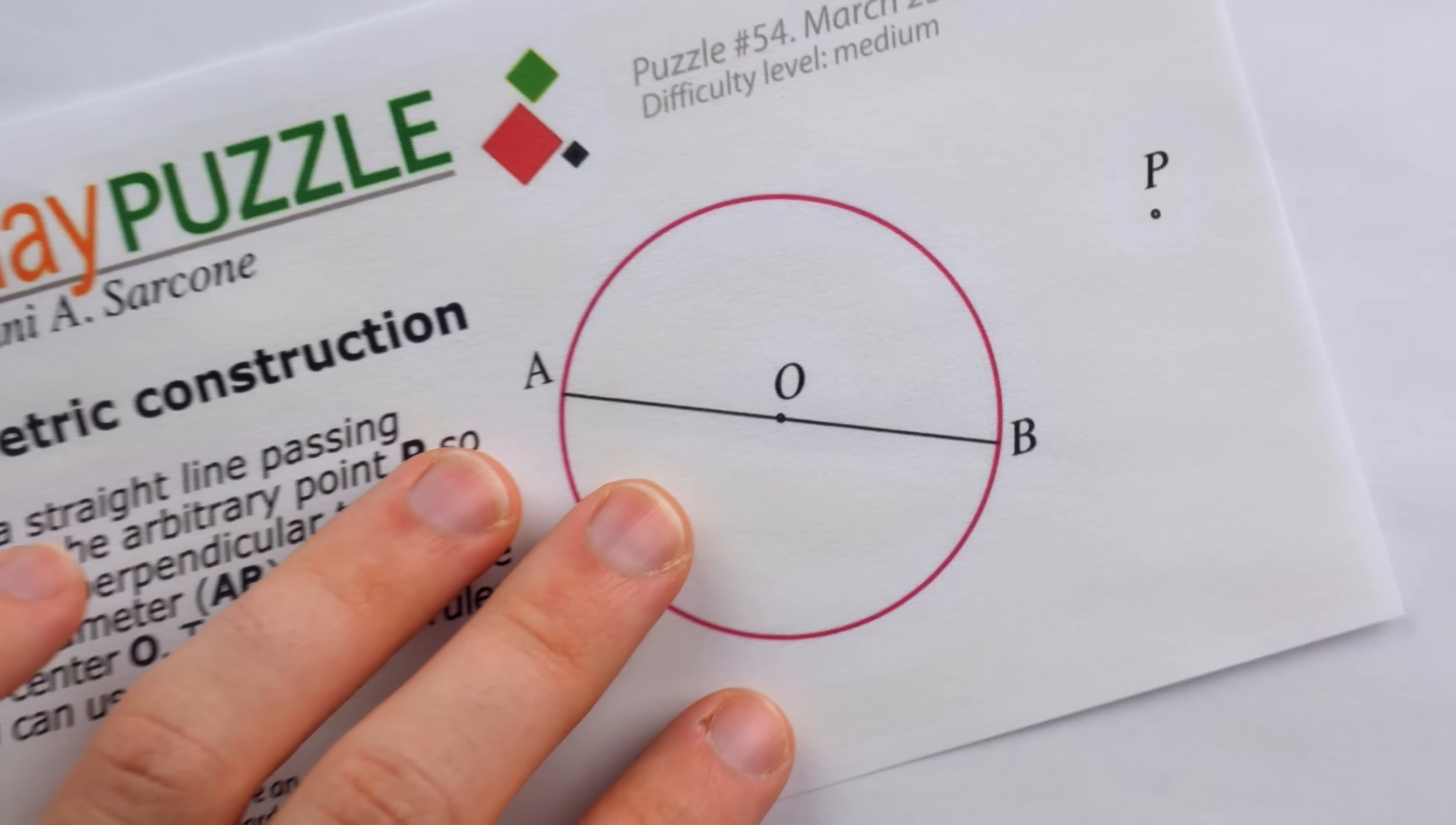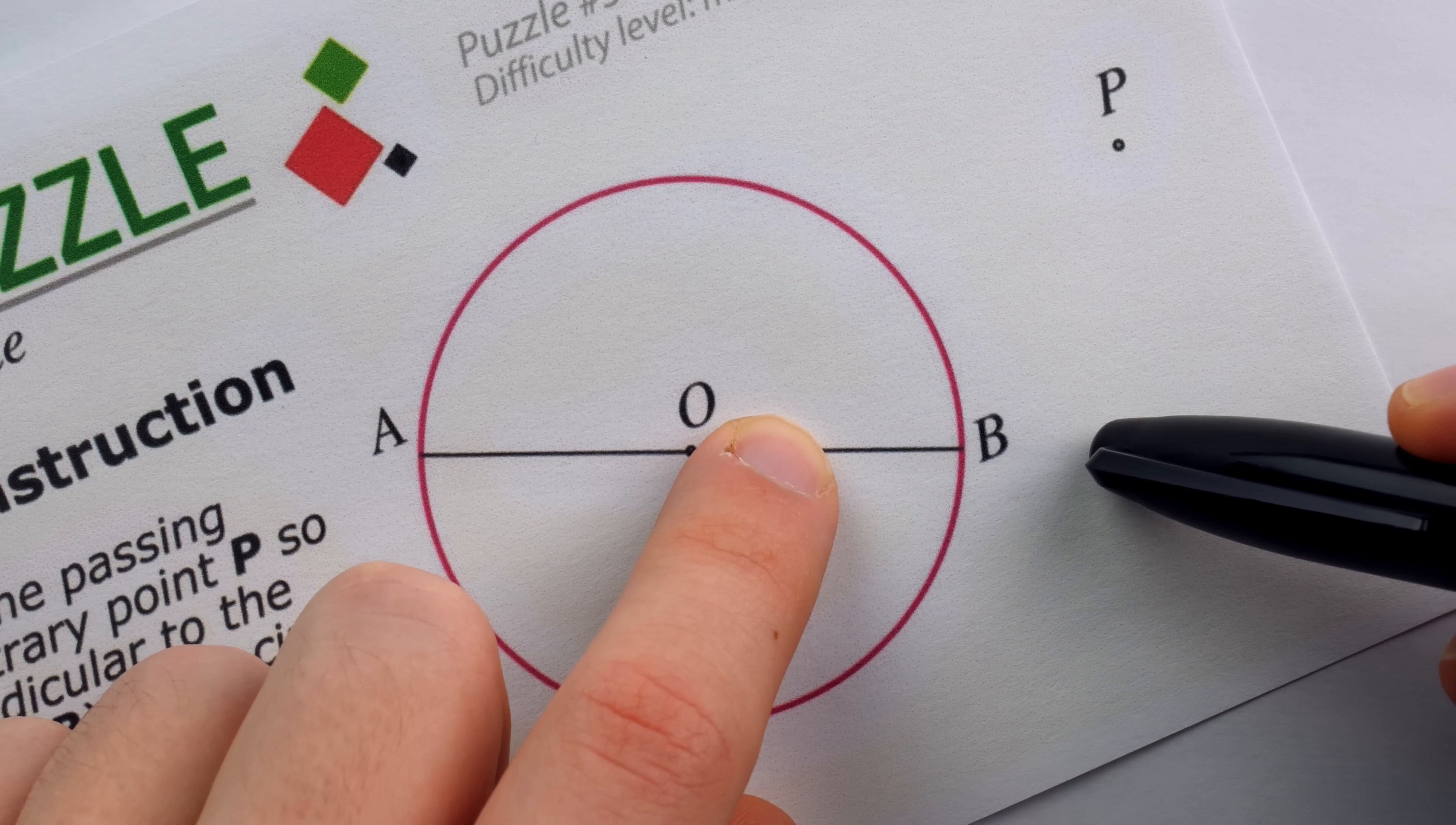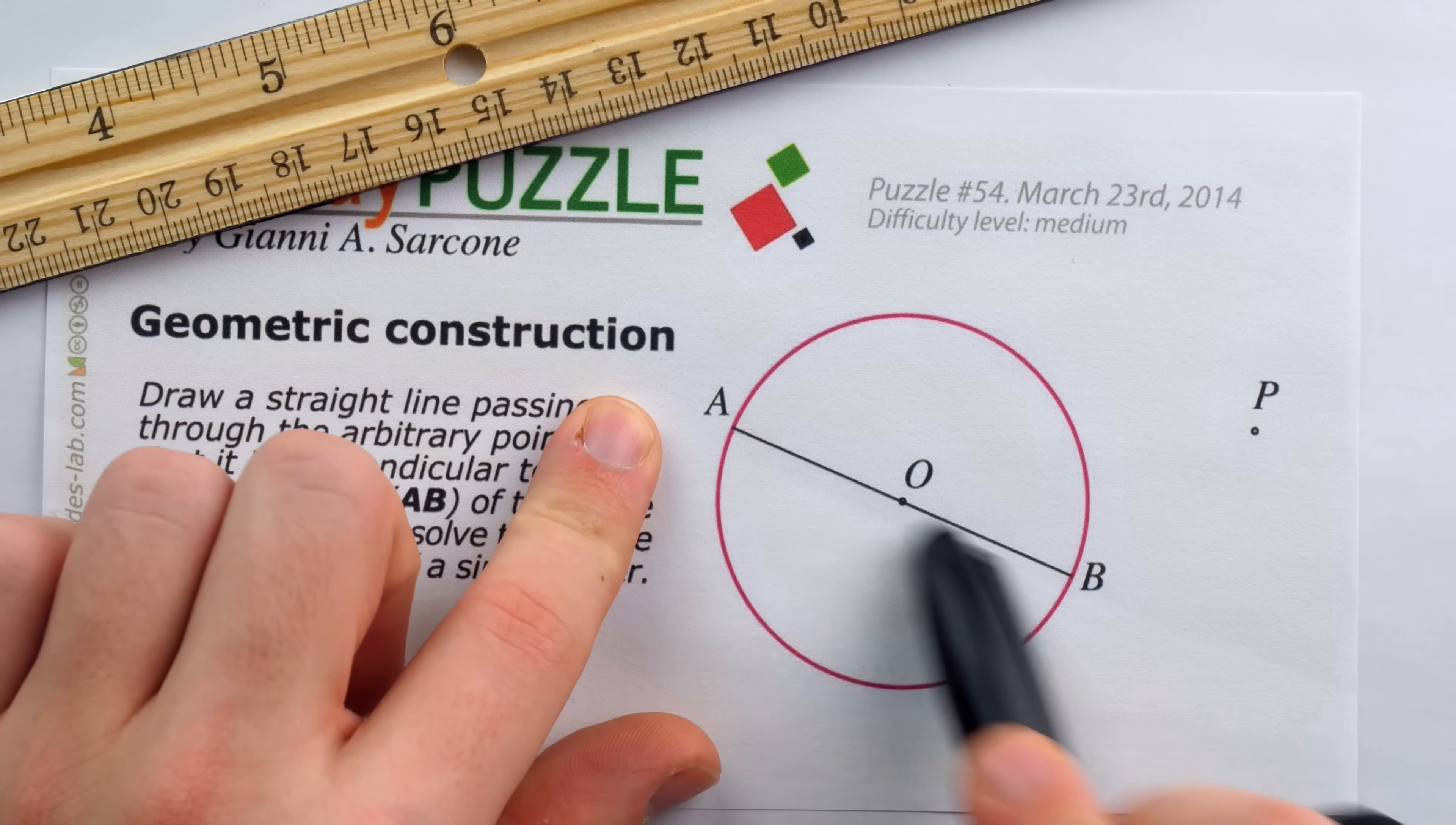For those unfamiliar with this type of problem, you can't just say, well if we continued AB it would look like that, and so a line through P something like that would be perpendicular. We can't just eyeball it. Instead, we have to use the straight edge to construct things in such a way that, thanks to the properties of mathematics and the laws of geometry, the line we make has to be perpendicular to the diameter.